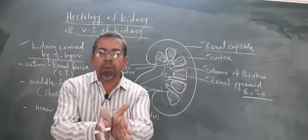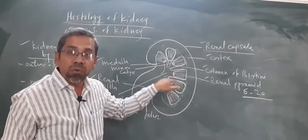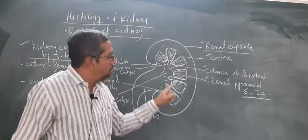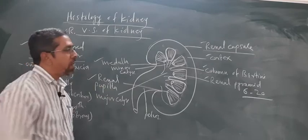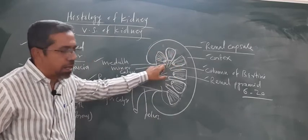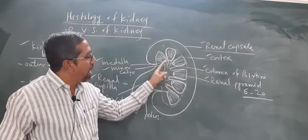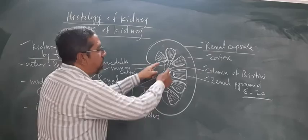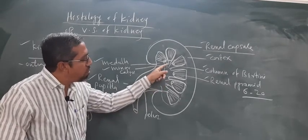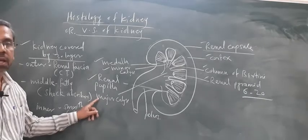Column of Bertini cortex का region है जो medulla तक पहुंचता है और दो renal pyramids को separate करता है। Renal pyramid के अंदर renal tubules मौजूद होते हैं जिनके जरिए ultra filtration के बाद urine का formation होता है। Urine renal papilla के जरिए बाहर निकलता है। Renal papilla के बाहर एक small cavity होती है जिसे minor calyx कहते हैं। कई minor calyx मिलकर एक larger cavity बनाते हैं जिसे major calyx कहा जाता है।